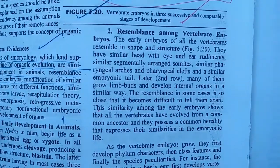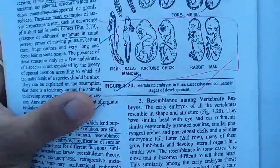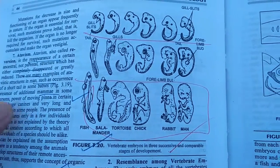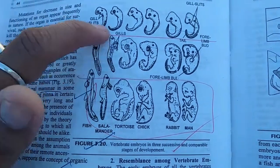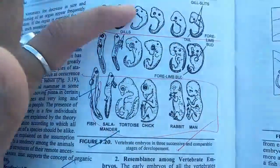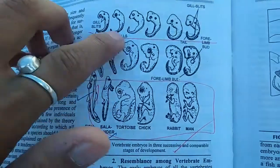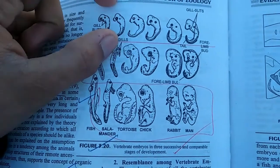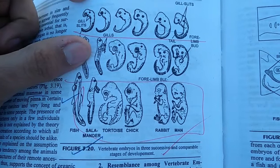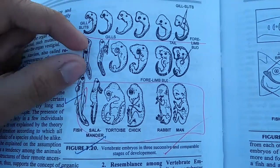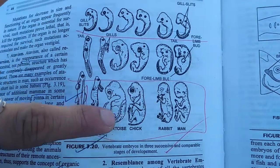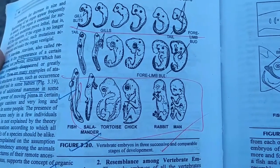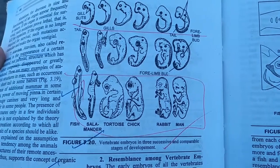Next is the resemblance among the vertebrate embryos. If I discuss about this diagram, you can very easily understand what I am trying to say. This is the fish early embryo, this is the salamander embryo, this is the tortoise, this is the chick, this is the rabbit, this is the man. You can never distinguish between these embryos from the early stages, from the very beginning of their embryonic life. So it shows that they have a common ancestral origin. But later on, when this period extends, demarcation and differentiation occur. So it shows a very useful feature — the resemblance among the vertebrate early embryos.